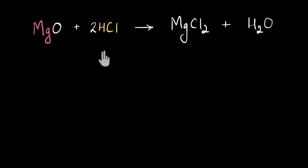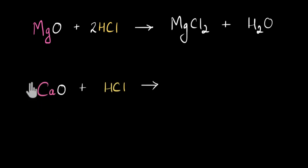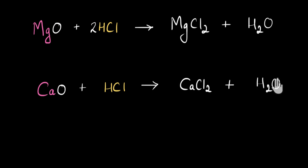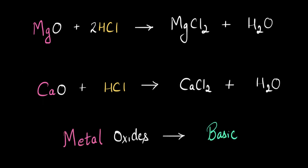Let's look at one more example to be sure. Here I'm taking calcium oxide — calcium is a metal, so I'm taking a metallic oxide — and reacting it with acid HCl. Calcium will get attracted to chlorine ion and we'll get calcium chloride, CaCl₂. Hydrogen will get attracted to oxygen and we will get water, H₂O. Here also you can see that metal oxide is reacting with an acid to give us a salt and water. So we can conclude that metal oxides are basic in nature — they behave as bases and react with acids to give us salt and water.